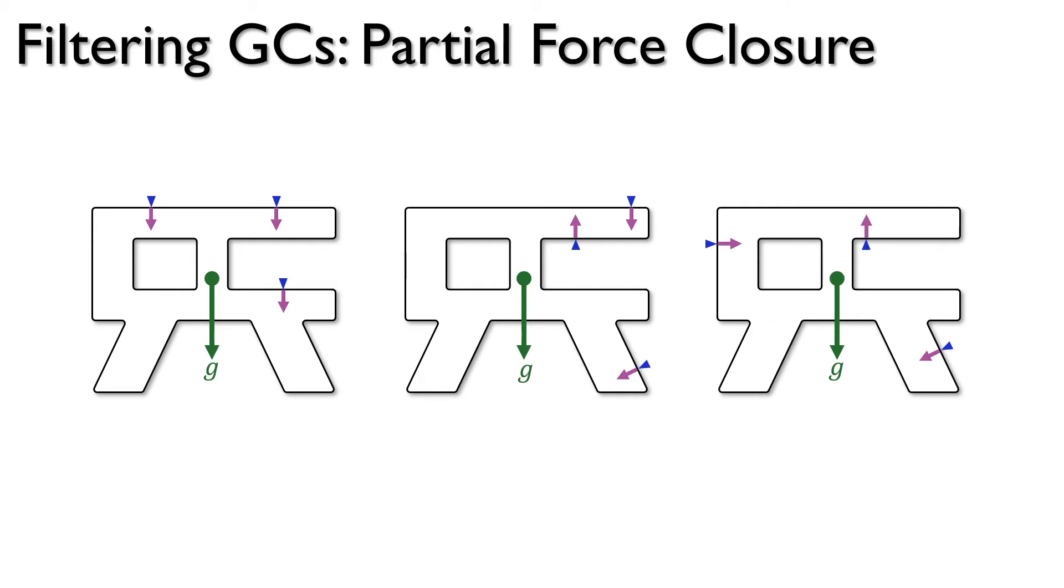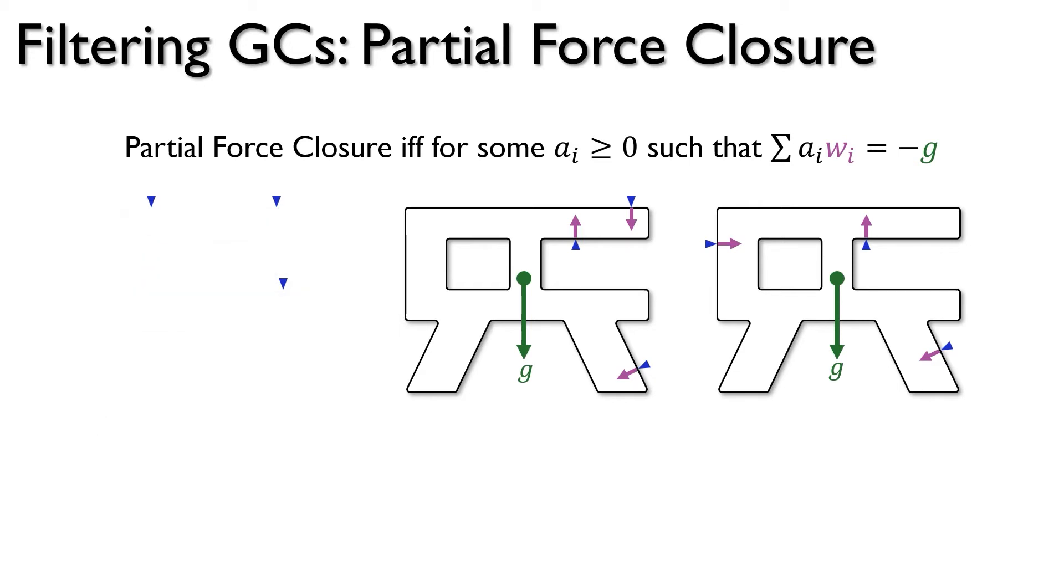To identify GCs that are unstable, we use a metric called partial force closure, which determines if an object can be held stably under gravity. Formally, it checks whether there exists a non-negative linear combination of forces and torques by the contact points such that it counteracts gravity. We can then remove unstable GCs from consideration.